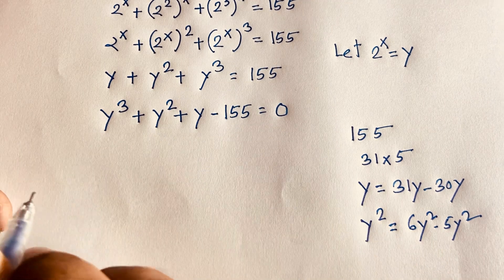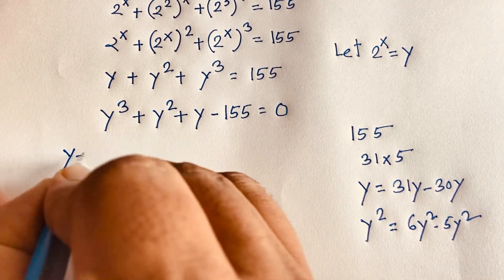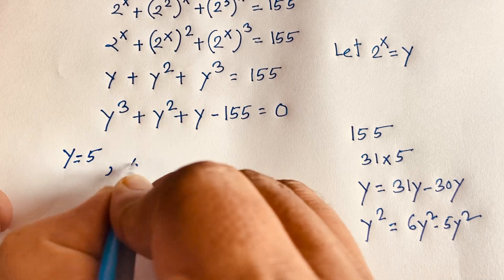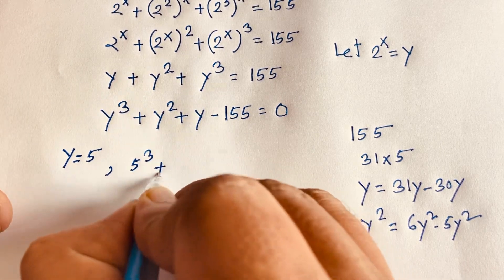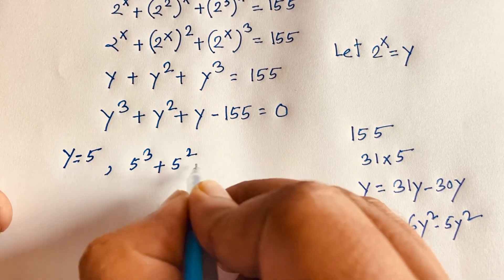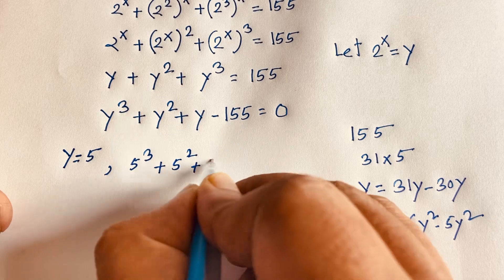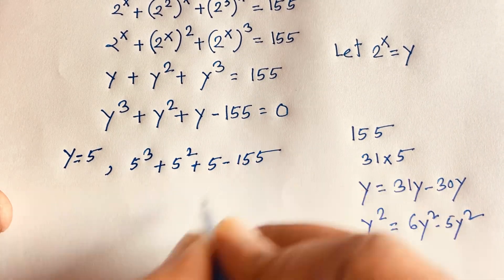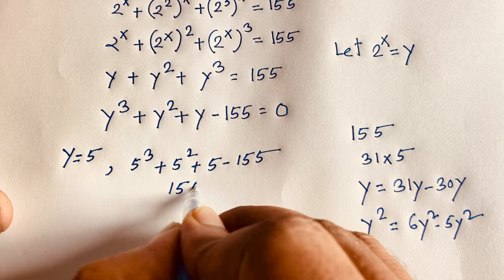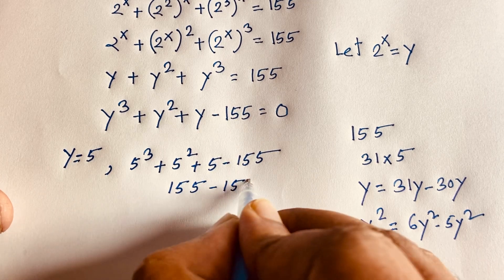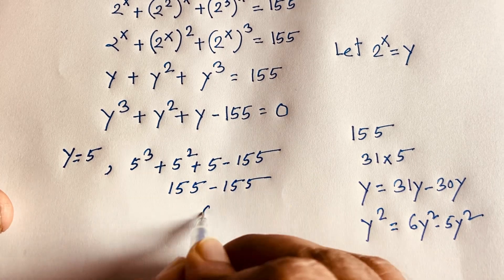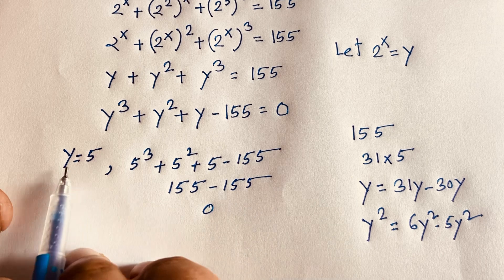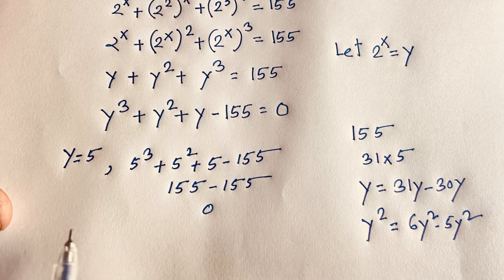Let's verify: if y equals 5, then 5 cubed plus 5 squared plus 5 minus 155 equals 125 plus 25 plus 5 minus 155, which equals 155 minus 155 equals zero. So y minus 5 is confirmed as one factor.